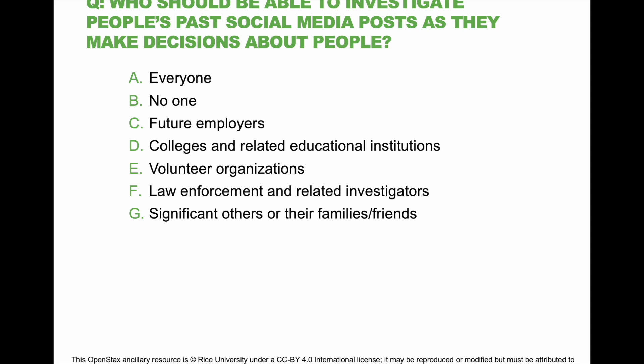Question: Who should be able to investigate people's past social media posts as they make decisions about people? Everyone. No one. Future employers. Colleges and related educational institutions. Volunteer organizations. Law enforcement and related investigators. Significant others, or their families and friends. Let me know in the comments.